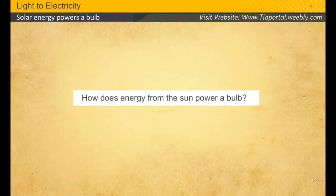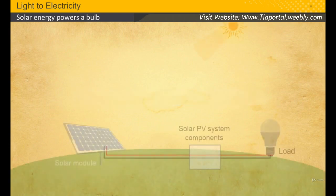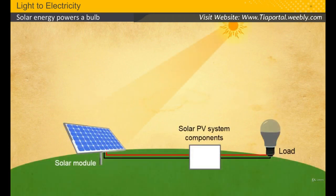We will begin with the chapter light to electricity. So how does energy from the sun power a bulb? Light energy from the sun is converted into electrical energy using solar modules which is then fed to the load.